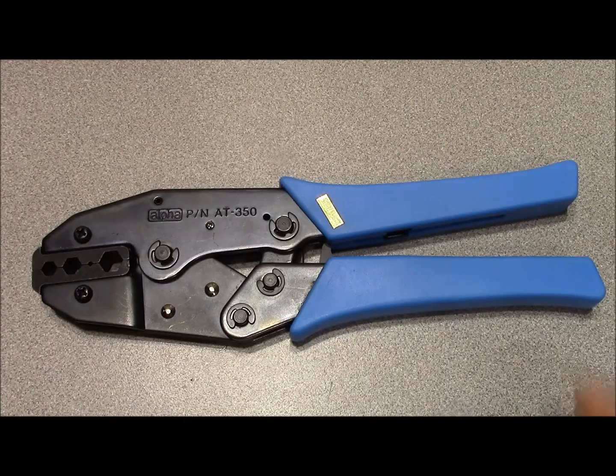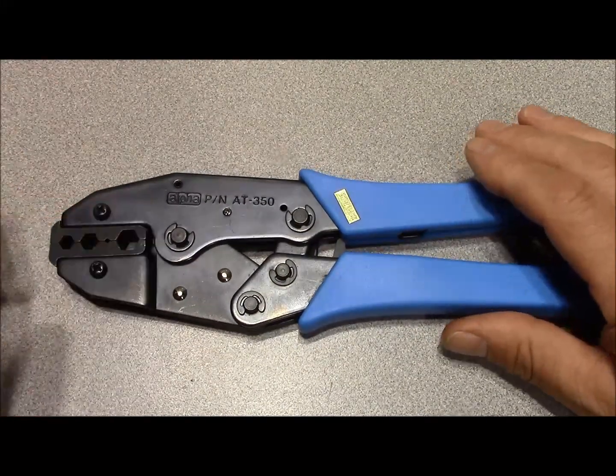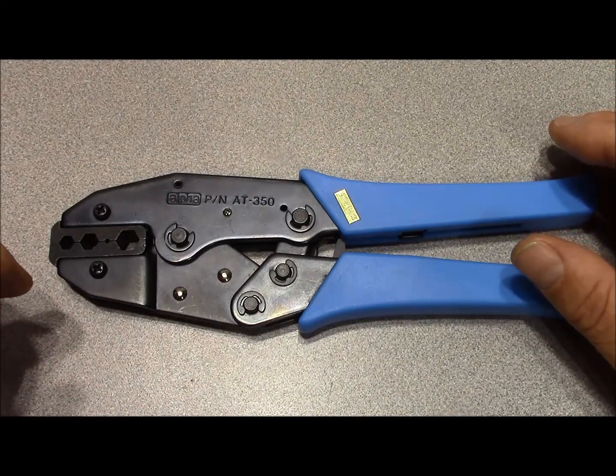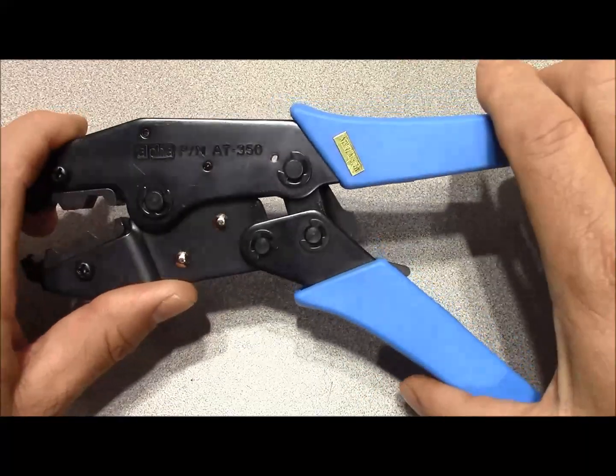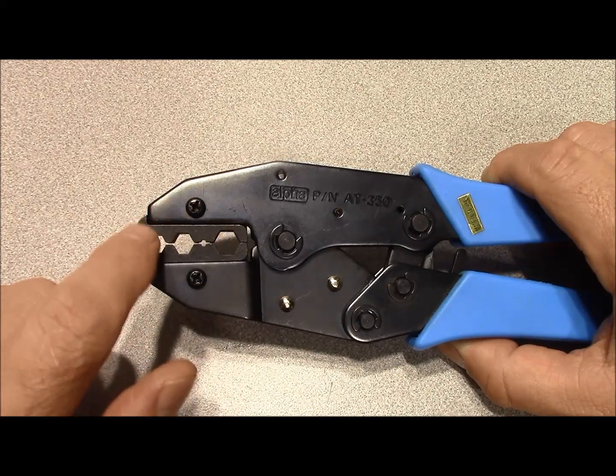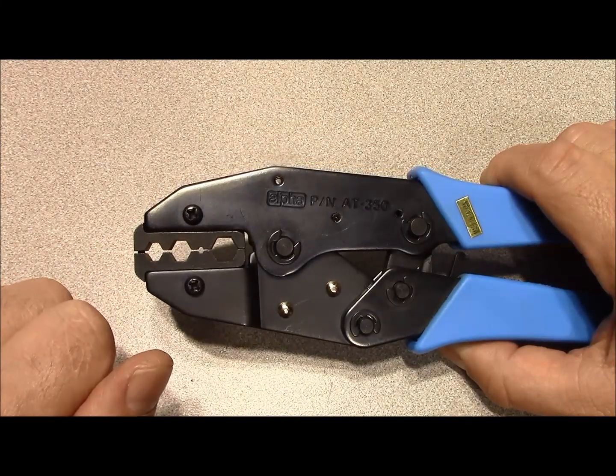Here's a standard garden variety ratcheting RF crimper that uses hex dies. And this particular model is the Alpha AT350. Skycraft Parts has these things for like $16 so they're not terribly expensive at all. And you can see it's got ratcheting action. It's got hex dies and we're going to discuss what sizes we need for popular 50 ohm RF cables.